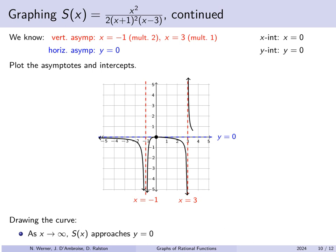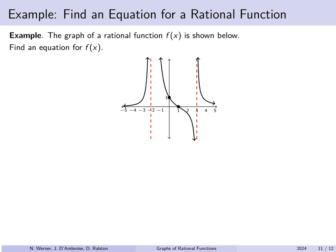As x continues further to the right, we have a horizontal asymptote of y equals 0, so the graph approaches that from above.